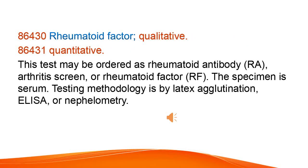Rheumatoid factor, qualitative. Quantitative. This test may be ordered as rheumatoid antibody, RA, arthritis screen, or rheumatoid factor, RF. The specimen is serum. Testing methodology is by latex agglutination, ELISA, or nephilometry.